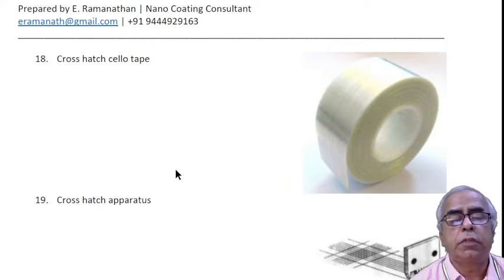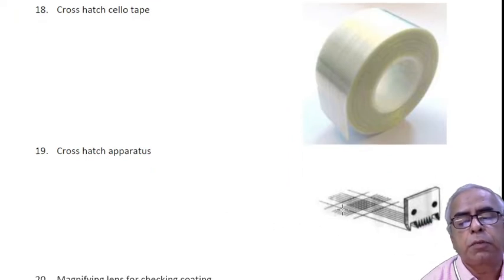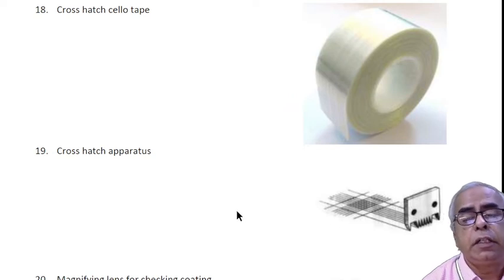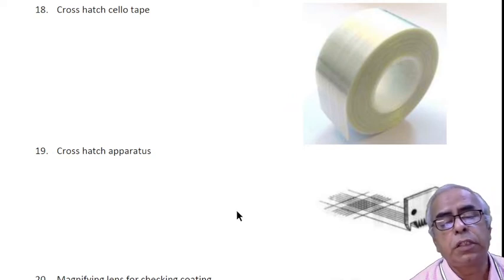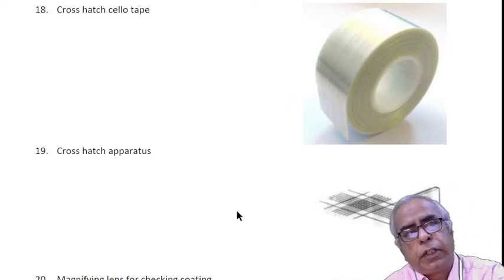You have cross hatch cellar tape, a special kind of cellar tape. You will make cross mark cuts using a cross hatch apparatus, then fix the tape on that. We pull the tape to test whether the cured film is adherent to the metal or not. This is called adhesion test.